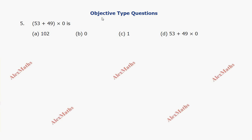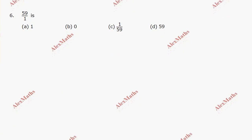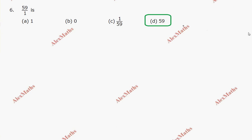Now objective type questions. Question number 5: 53 plus 49 into 0. Any number multiplied by 0 is 0, so 49 into 0 is 0, and 53 plus 0 is 53. Option B. Question number 6: 59 divided by 1. Anything divided by 1 is the number itself, so the answer is 59. Option D.